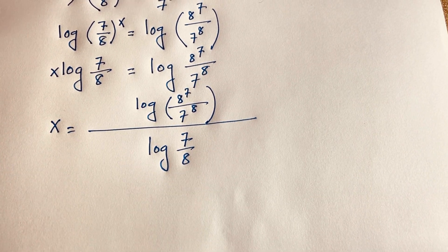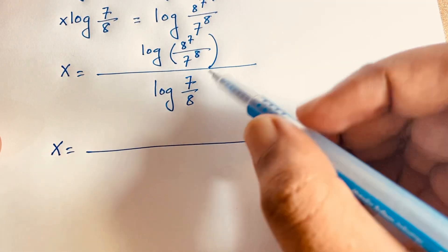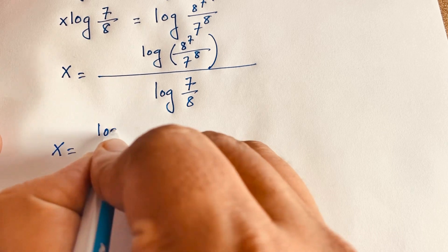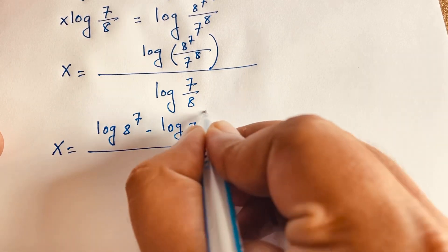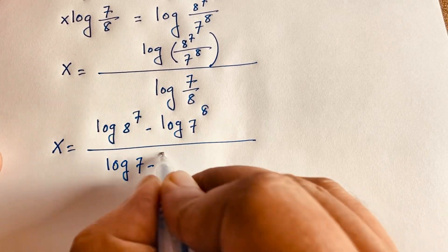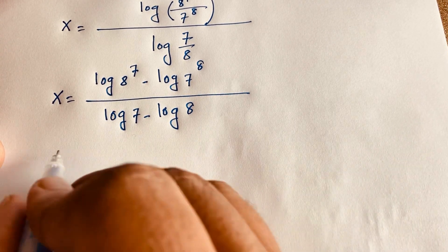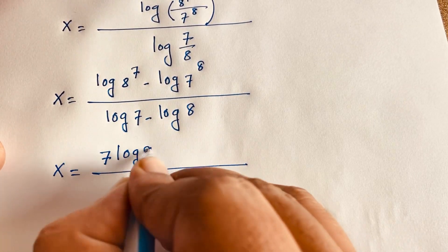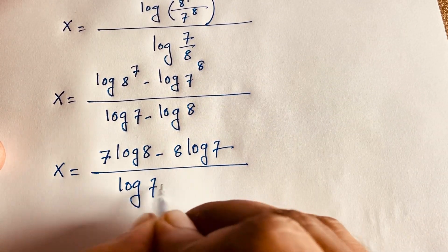Now if I use the calculator, we know that log(a/b) equals log a minus log b. According to this law, this expression becomes: log(8^7) minus log(7^8), over log 7 minus log 8. The exponents move in front, so x is equal to 7·log 8 minus 8·log 7, over log 7 minus log 8.